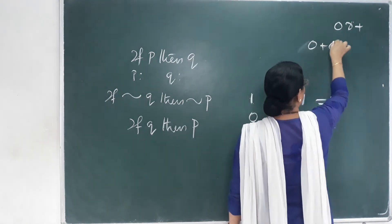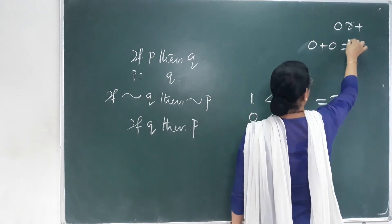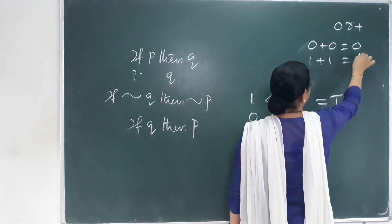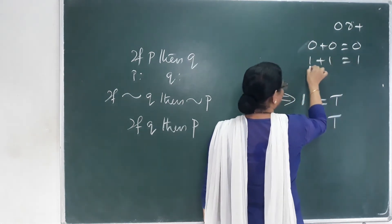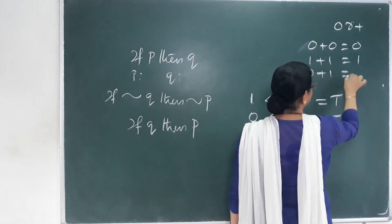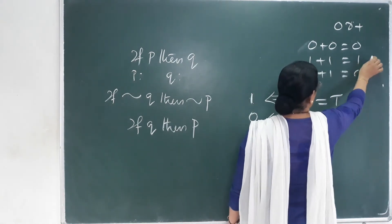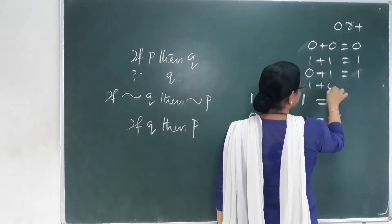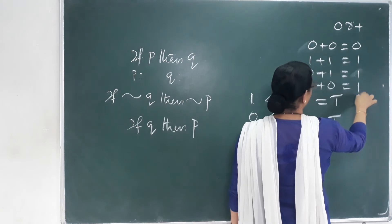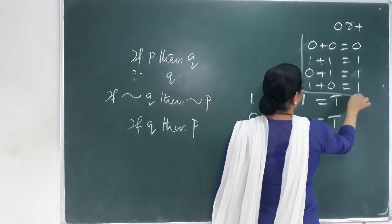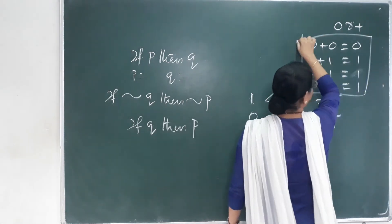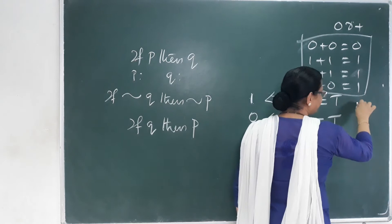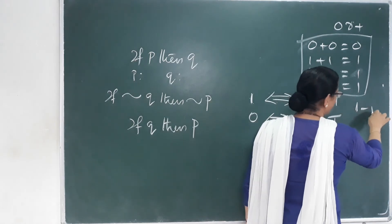0 plus 0 is equal to 0. 1 plus 1 is equal to 1. 0 plus 1 is equal to 1. 1 plus 0 is equal to 1. We call it valid. Let's say that the statement is valid.